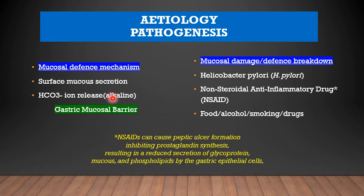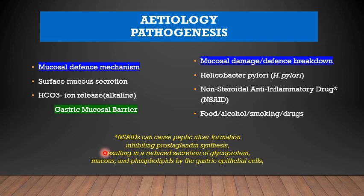Under the destructive mechanisms would be Helicobacter pylori infection, non-steroidal anti-inflammatory drugs, certain toxic foods, alcohol, smoking and drugs. NSAIDs are very important because they cause peptic ulceration by inhibiting prostaglandin synthesis, which results in a reduction in the secretion of glycoprotein mucus, phospholipids and gastric mucosa. The NSAIDs break down the defence gastric mucosal barrier and lead to ulcer formation.